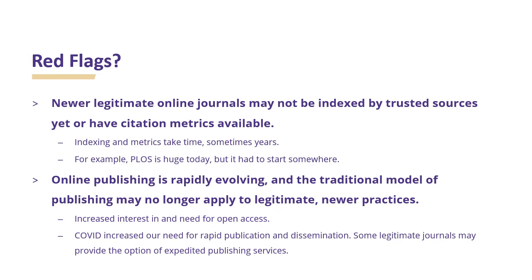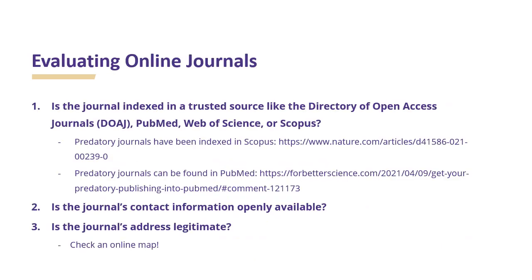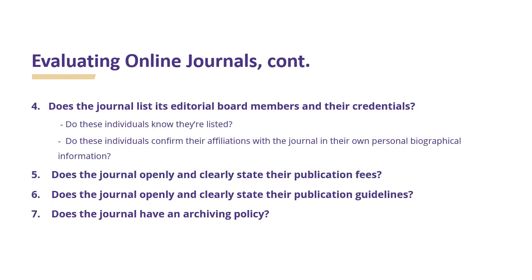Online publishing is rapidly evolving and the traditional model of publishing may no longer be relevant to legitimate, newer practices. These are some of the things that we recommend for evaluating online journals. One, is the journal indexed in a trusted source like the Directory of Open Access Journals, PubMed, Web of Science, or Scopus? Two, is the journal's contact information openly available? Three, is the journal's address legitimate? Four, does the journal list its editorial board members and their credentials? Five, does the journal openly and clearly state their publication fees? Six, does the journal openly and clearly state their publication guidelines? Seven, does the journal have an archiving policy?